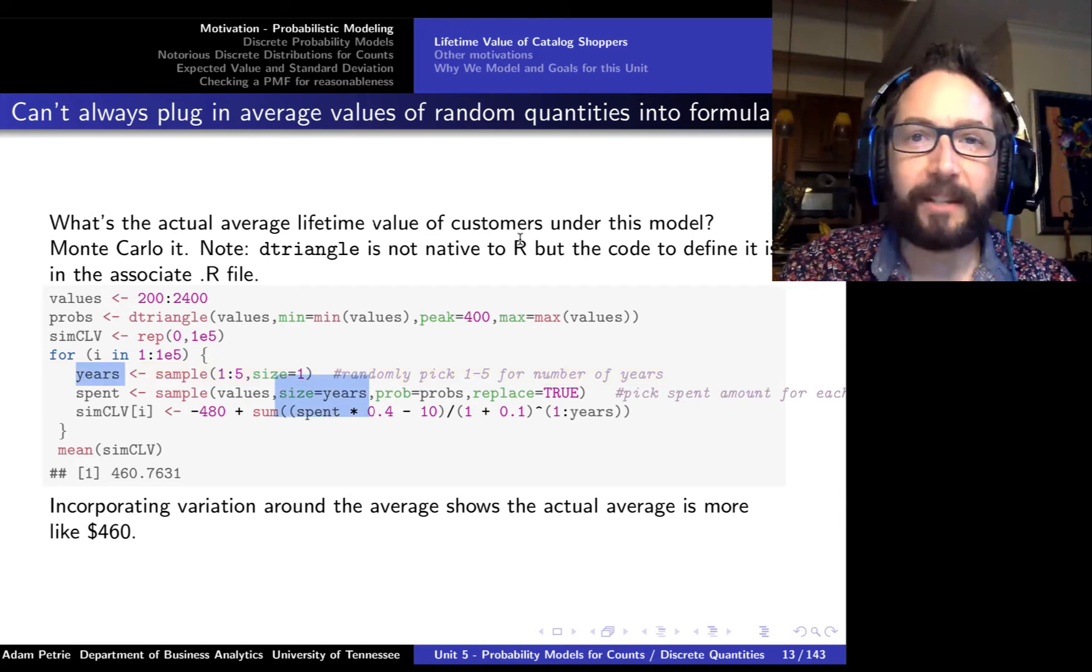Let's imagine that the number of years that a customer shops with this company is equally likely to be anywhere from 1 to 5, so the average is 3, as accounting reported. And let's assume that the amount spent per year has an average of $1,000, but it varies anywhere between $200 and $2,400, peaking at $400. That triangle gives an idea of the relative frequencies of the different numbers that we can expect to see for the amount spent per year over the customers. Let's add a bit of realistic randomness to describe the customers more fully. We can write a Monte Carlo simulation to actually see what that average customer lifetime value is.